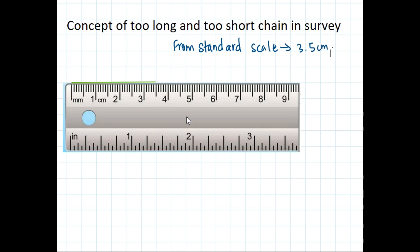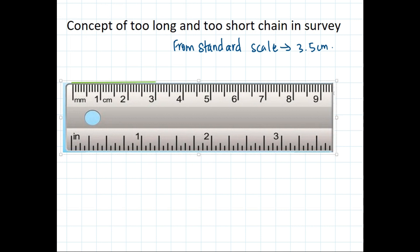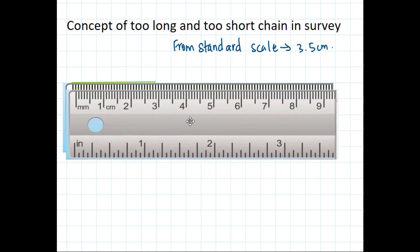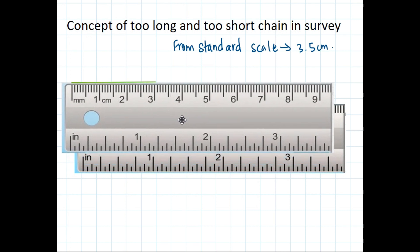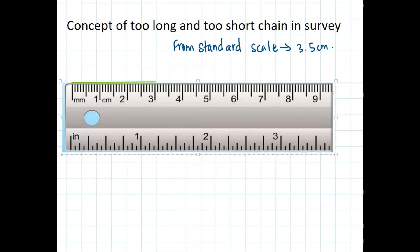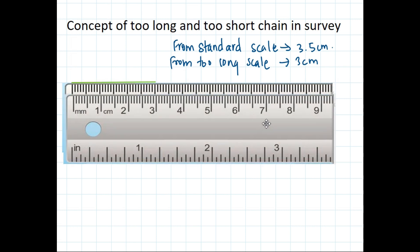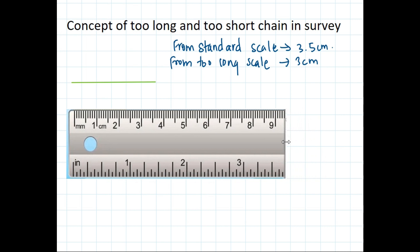Now let's make this scale too long — that means let's stretch this scale a little bit. Now let's again measure using this too long scale. Measuring this length with the too long scale gives us 3 centimeter. So from the too long scale, it is 3 centimeter.